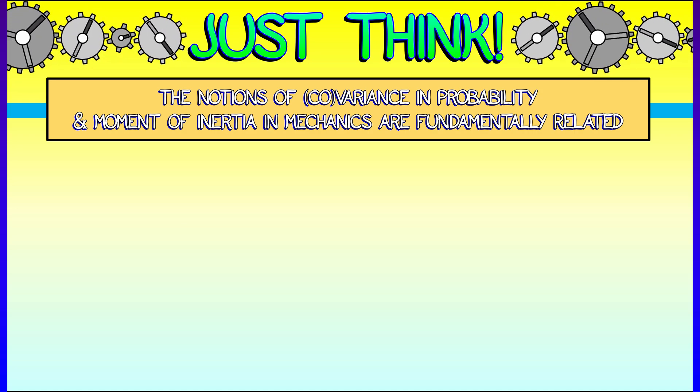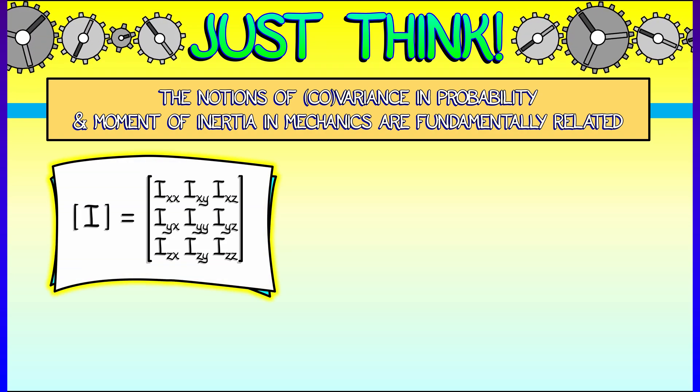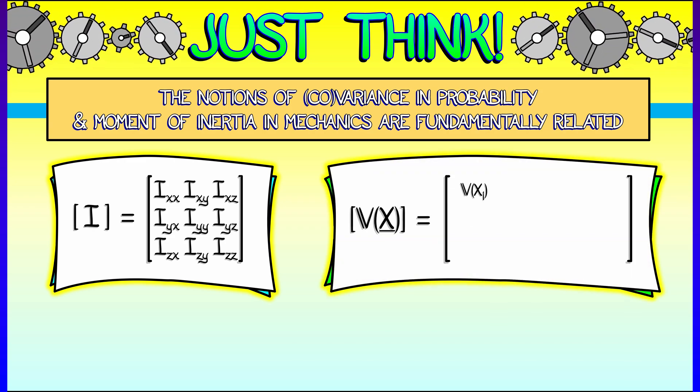If we think about the inertia matrix for a three-dimensional body and compare that to the covariance matrix for a collection of random variables, there are a lot of structural similarities. There are a lot of similarities in terms of how you use them algebraically.